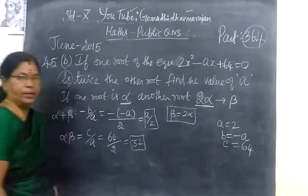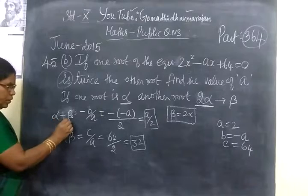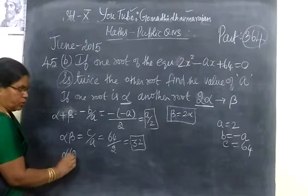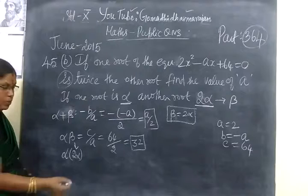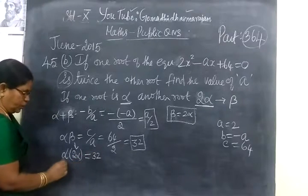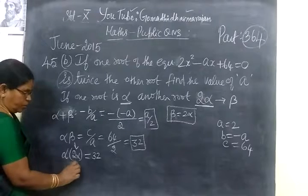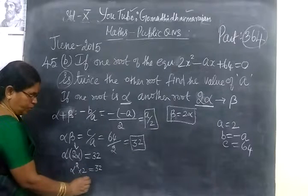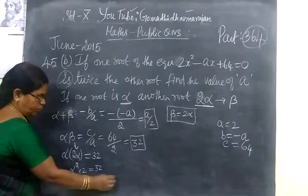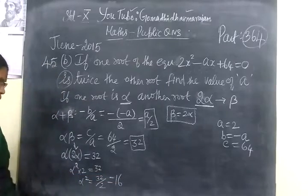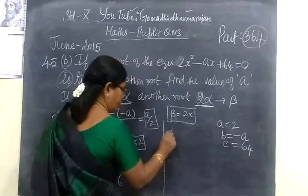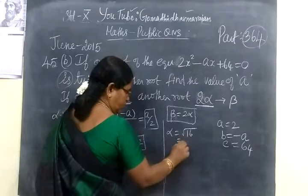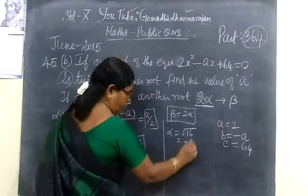So you can write beta as 2 alpha and substitute. Alpha into 2 alpha — alpha squared into 2 — equal to 32. So alpha square equal to 32 by 2, which gives 16. So alpha equal to plus or minus root of 16, equal to plus or minus 4. Now you know the alpha value.